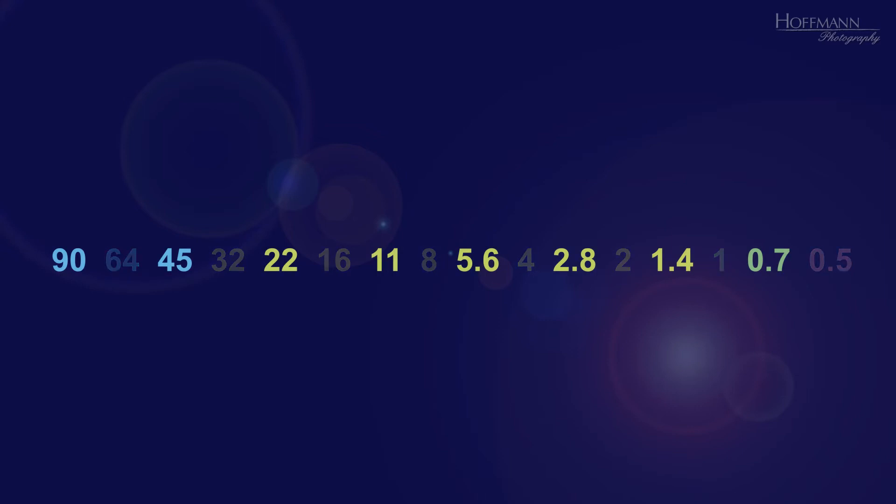Also, 11, 22, 45 and 90 actually have decimal places, but for the sake of simplicity they have been omitted. With the exception of f0.5, the other f-stops are actually integers without decimal places.